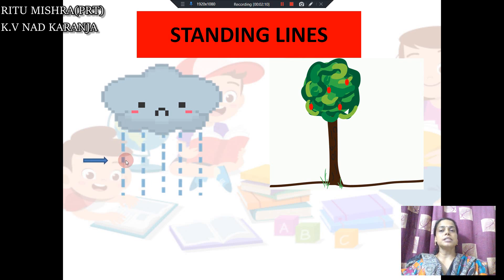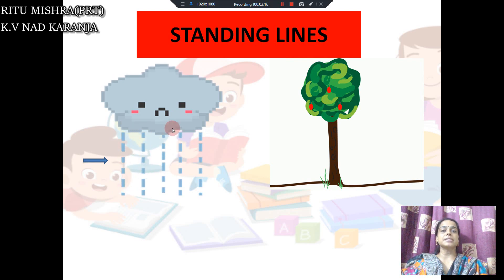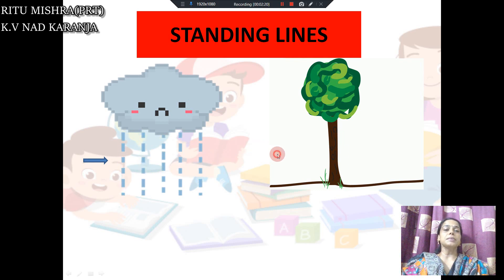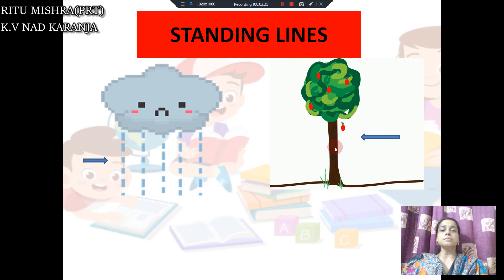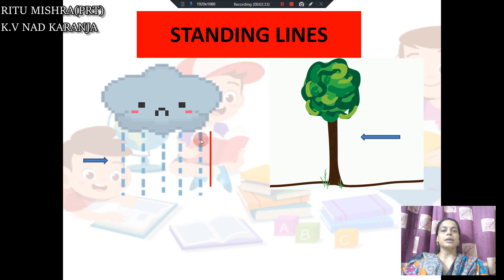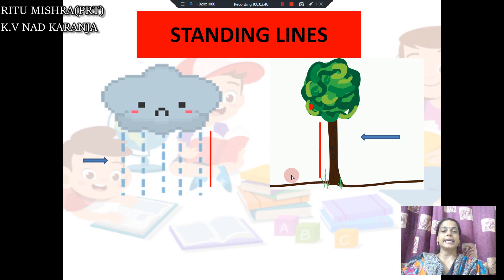Just see this pattern of raining. In this pattern, you can see that the rainfall is happening in a straight, straight line — seedhi line. Similarly, if you look at the stem or trunk of the tree, it is also completely straight — khadhi rekha, seedhi rekha, standing line, straight line. So again, if you join the rain pattern, you can see it is this way. Similarly, the tree trunk is also straight. So this is known as standing line.